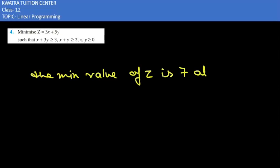The minimum value of z is 7 and the coordinates are (3/2, 1/2). This is our solution for the question.